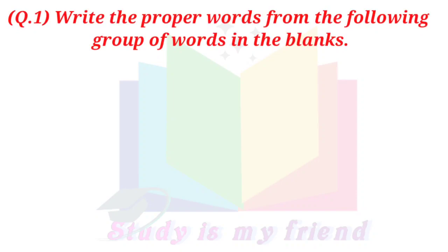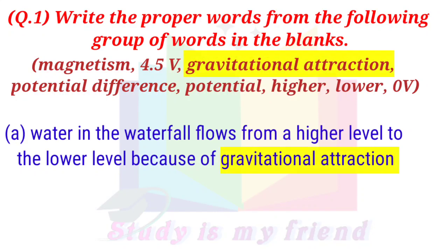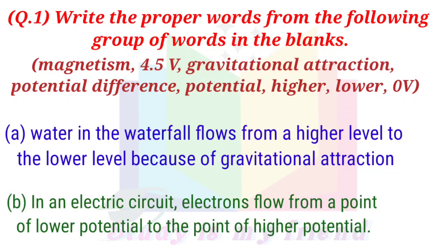Question 1. Write the proper words from the following group of words in the blanks. A. Water in the waterfall flows from a higher level to the lower level because of gravitational attraction. B. In an electric circuit, electrons flow from a point of lower potential to the point of higher potential.